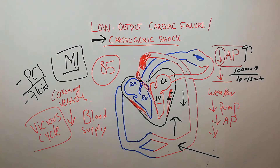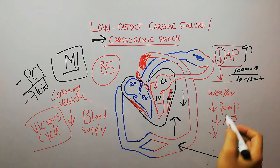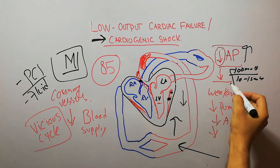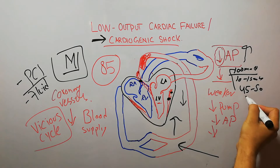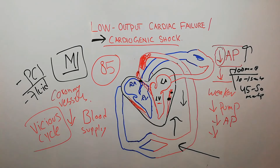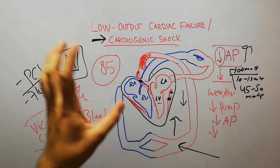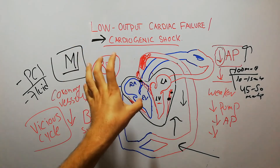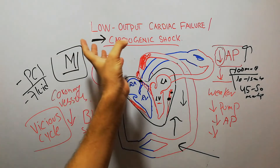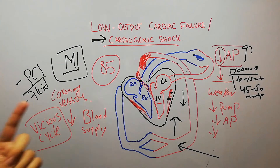But in normal people whose coronary blood vessels are healthy, the arterial pressure has to decrease to around 45 to 50 mmHg before the vicious cycle leading to cardiogenic shock will occur. This shows that the more damage present in the coronary vessels, the more decreased blood flow in the coronary vessels, and the greater the chances of cardiogenic shock and the vicious cycle leading to death.